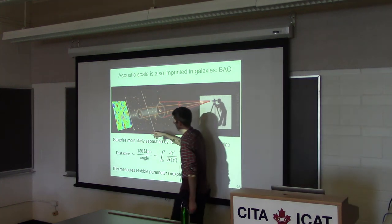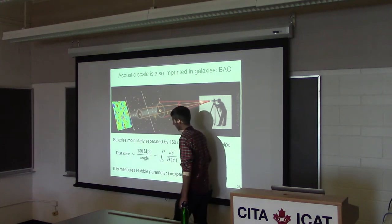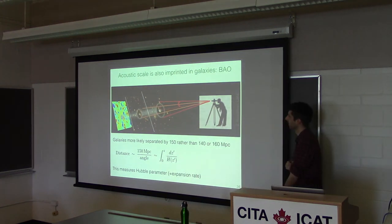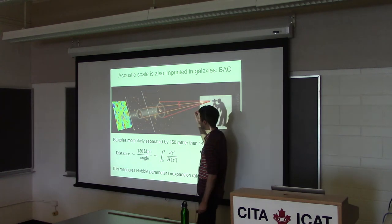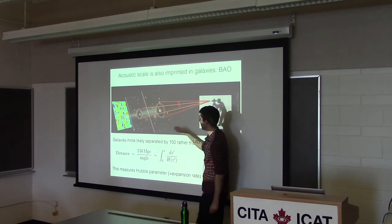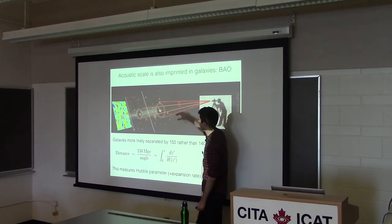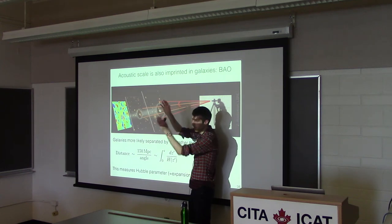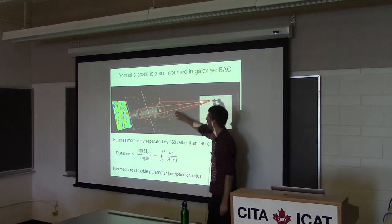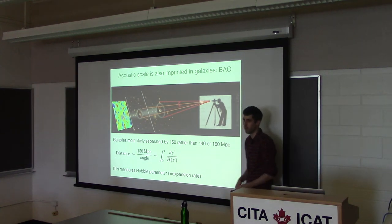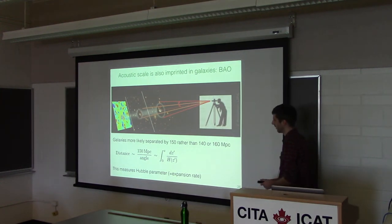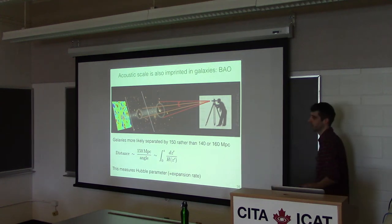The BAO scale works as follows: by observing the preferred physical separation of 150 megaparsecs at different redshifts, at each redshift you can ask what angle subtends that physical size, which tells you how far away that standard ruler is. This gives a measurement of distance as a function of redshift, measuring expansion and the Hubble parameter. This has been shown to work very well in practice — the baryonic acoustic peaks are visible in Sloan data.